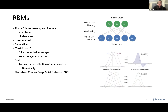These RBMs can be stacked — you can train one layer at a time and have them in sequence to create a deep network. This mitigates some of the extreme memory requirements that back-propagation and deeper multi-layer perceptron architectures require, because you can do a single layer at a time. There are also convolutional versions of these, which I'll discuss later.